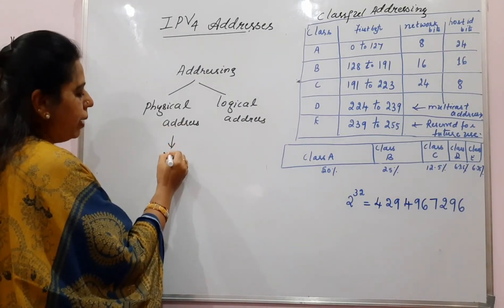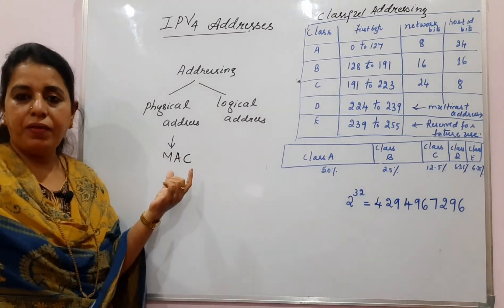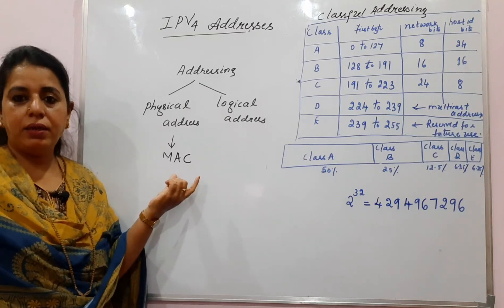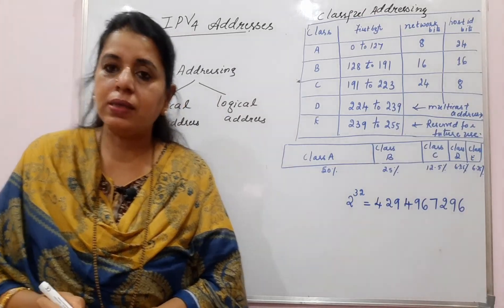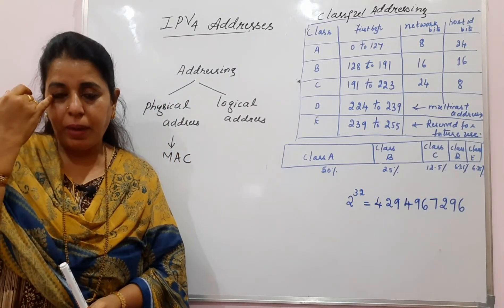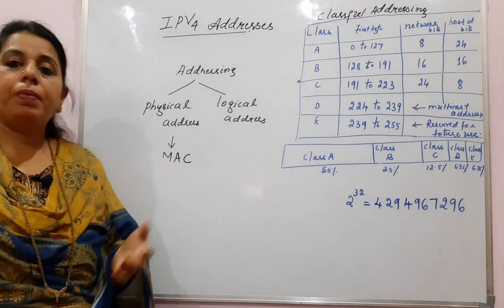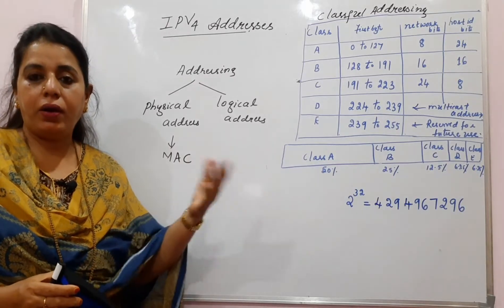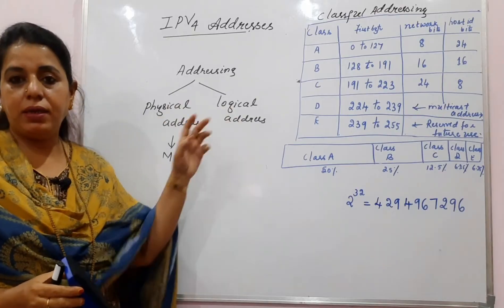The physical address for a device is always the MAC address — you should have already studied this in previous courses. It is a 48-bit address printed on the network interface card of any device, and it is a unique number. Every device can be identified with that 48-bit number. To send a message or data to any destination host, we require the logical address.